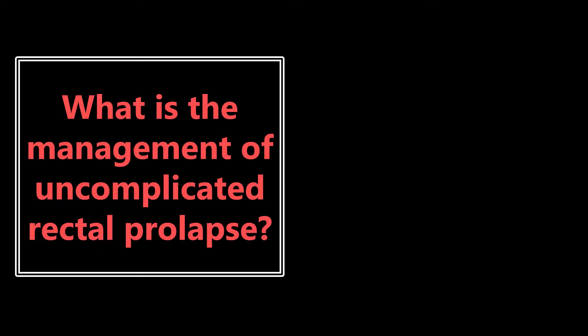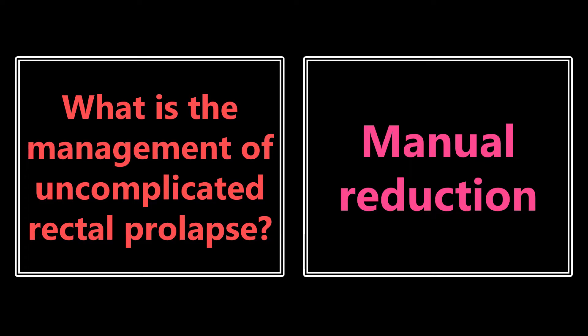What is the management of uncomplicated rectal prolapse? It's going to be manual reduction if it's uncomplicated. Specifically, you can use granulated sugar, which helps reabsorb water and reduce swelling of the tissue — that's how you manage rectal prolapse. The other important thing to know: if it is complicated, do not do manual reduction. The management of complicated rectal prolapse would be surgery.